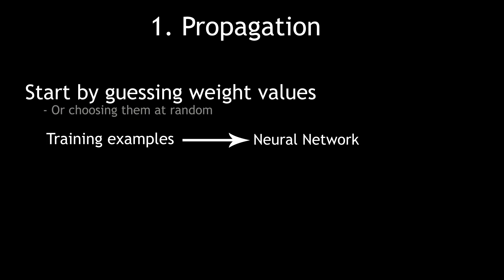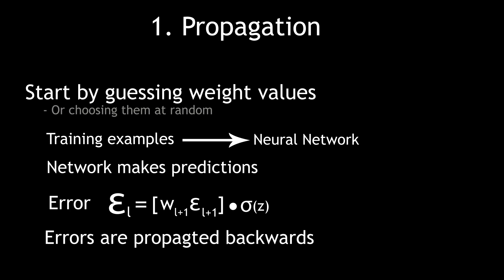The inputs are propagated through the network as usual, until the network produces outputs. After the network makes its predictions, an error is calculated for each desired output. The reason for doing this is that the errors for a neuron in any particular layer, say L, can be expressed in terms of the errors of the neurons in the next layer up, L plus 1. So starting from the output layer, the errors are propagated backwards until an error has been calculated for each neuron in the network.